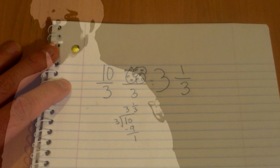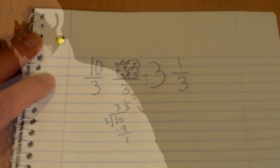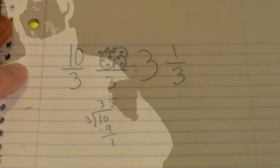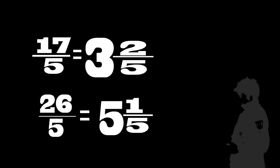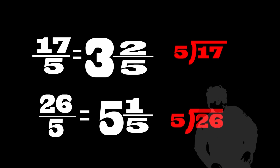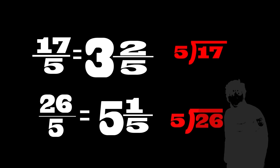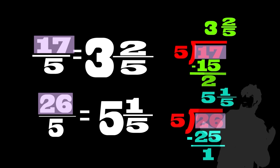Did you find it? There are three groups of three and one left over. Mixed numbers are just like division — can you show me how?